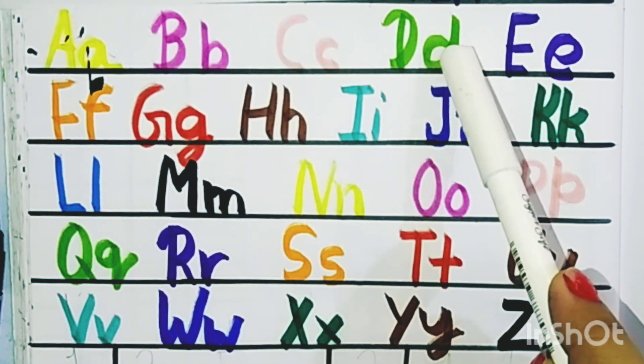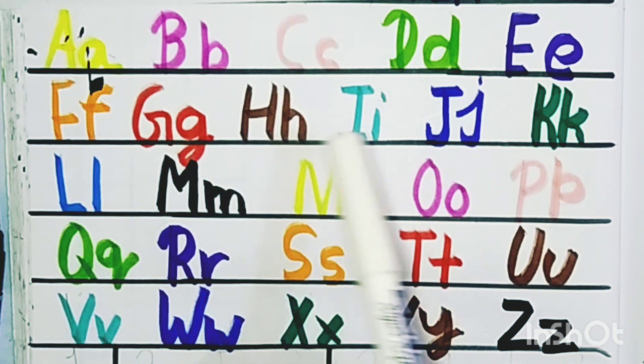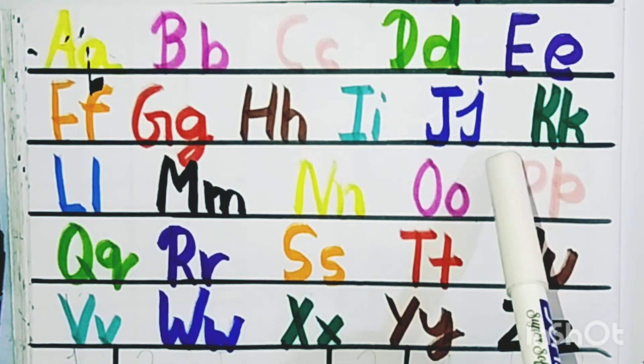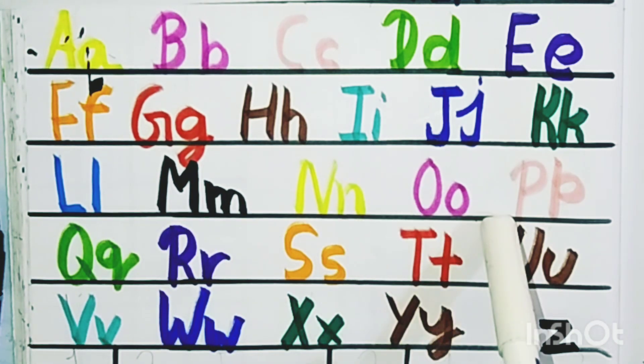A for apple, B for ball, C for cat, D for dog, E for elephant, F for fish, G for girl, H for hand, I for ice cream, J for jug, K for kite, L for lion, M for monkey, N for nose, O for orange, P for parrot, Q for queen, R for rabbit.